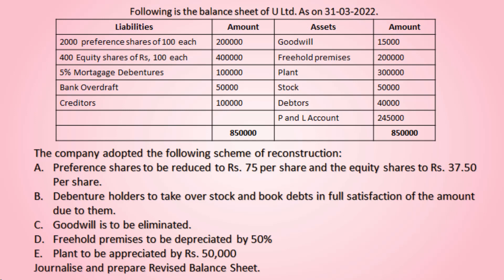Debenture holders are to take over stock and book debts in full satisfaction of the amount due to them. So debenture holders are allowed to take stock and debtors. Next, goodwill is to be eliminated — whatever the goodwill value is, we are going to eliminate it. Then freehold premises to be depreciated by 50%.